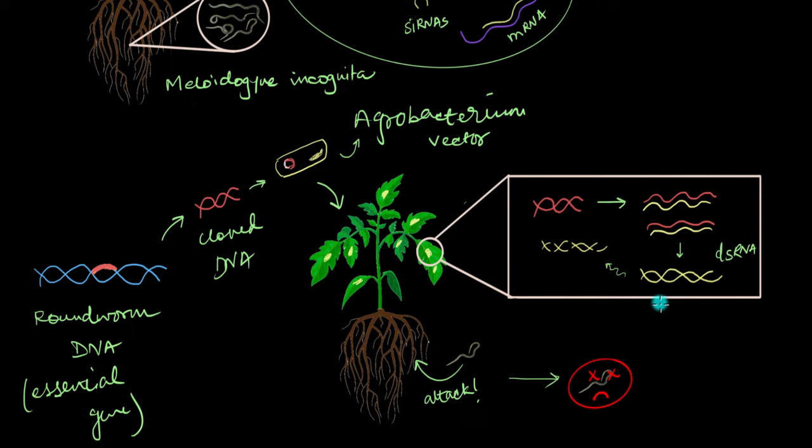Now over here two things can happen. One, this double-stranded RNA can stay as it is, or it will get broken down into small pieces of RNA by the plant's RNA interference machinery.